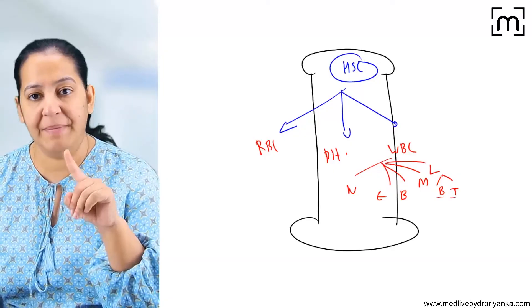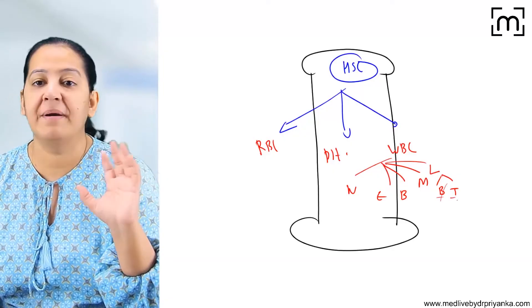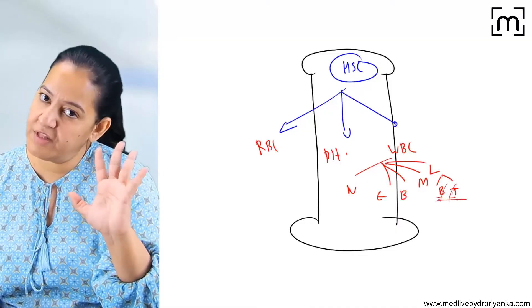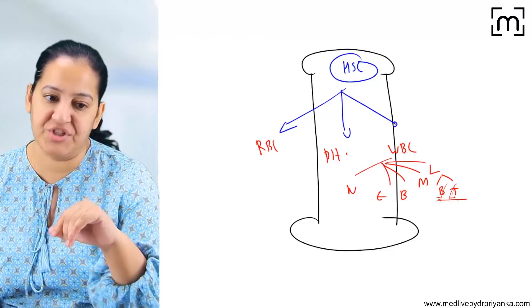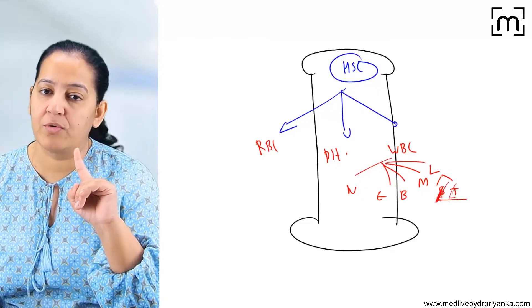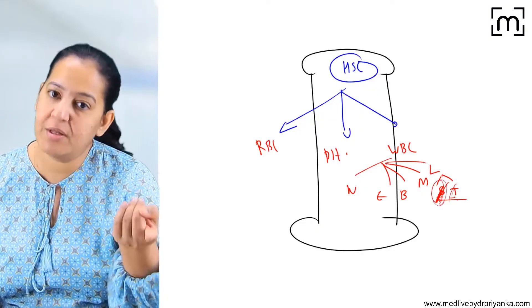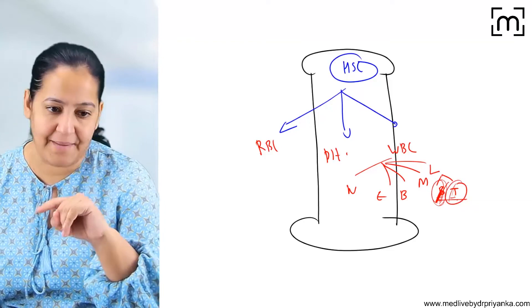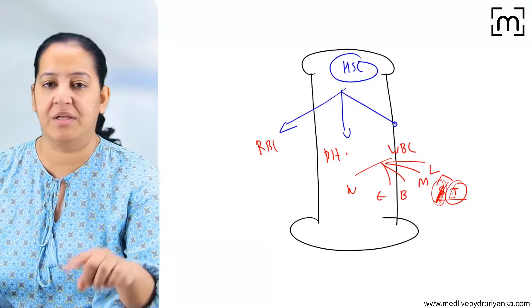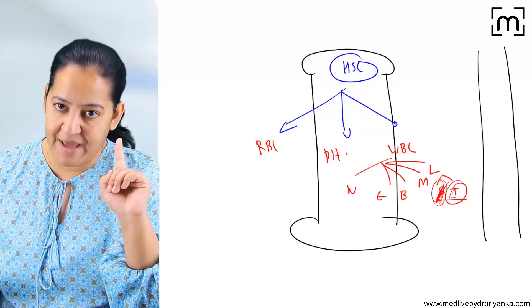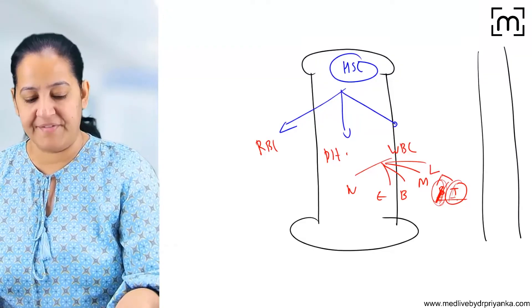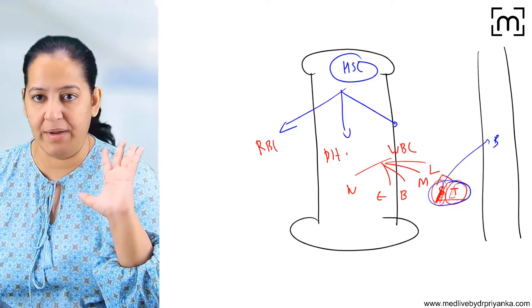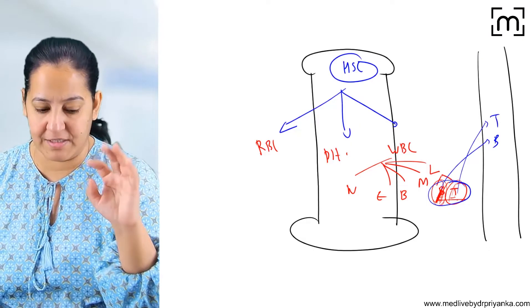B and T lymphocytes will mature after formation. B lymphocyte matures in the bone marrow itself — B for bone marrow — but T lymphocyte matures in the thymus — T for thymus. Both are formed in the bone marrow but the organ of maturation is different. After maturation, they move to the peripheral blood. B lymphocyte as well as T lymphocyte are moving in the blood.